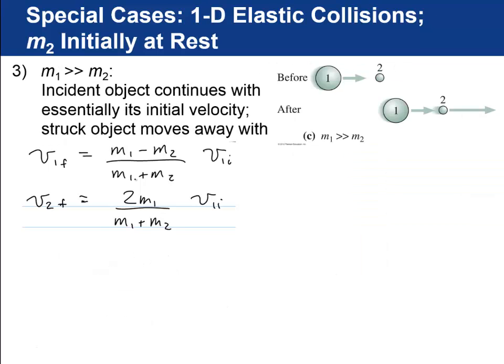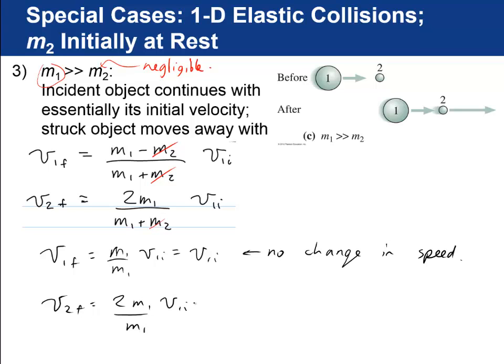And third special case is when m1 is much greater than m2. In this case, m1 is the big guy and m2 is negligible. In our equations, we can just cross off the m2's. In that case, v1 final will just equal v1 initial, so it won't change its speed. It'll just keep going, clocking along. And v2 final turns out to be 2 times v initial. That means that little object 2 zooms away at twice the speed of v1. So they keep the same relative speed before and after the collision, because it's elastic.